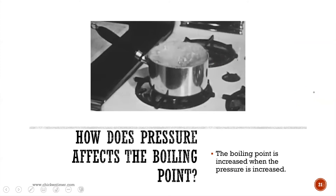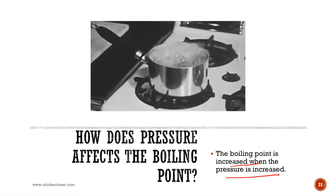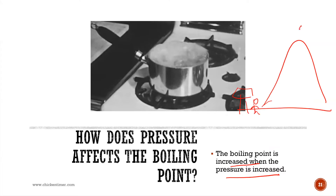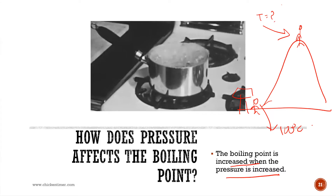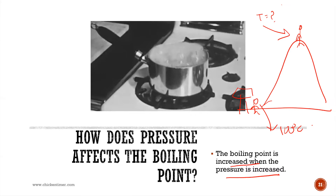Pressure also affects the boiling point — if you increase pressure, the boiling point also increases. Going back to the mountain top example, at sea level water boils at 100°C. On the mountain top, where pressure is lower, water will boil at less than 100°C — maybe 90-something or 80-something degrees, depending on how high the mountain is. You should Google the boiling point of water on Mount Everest.